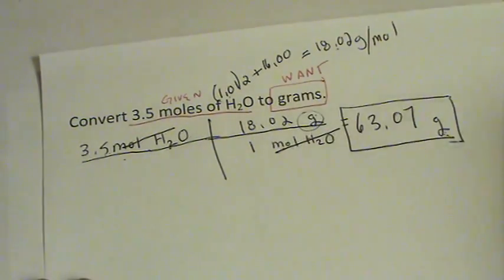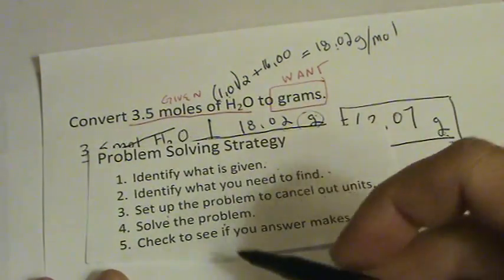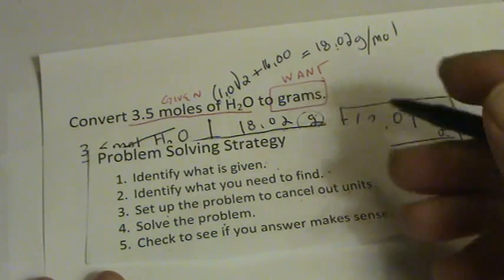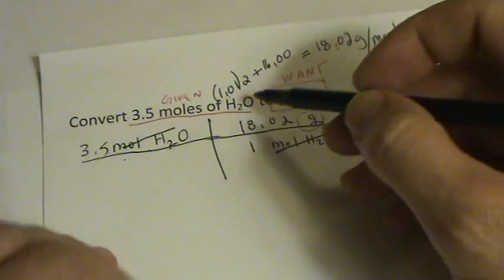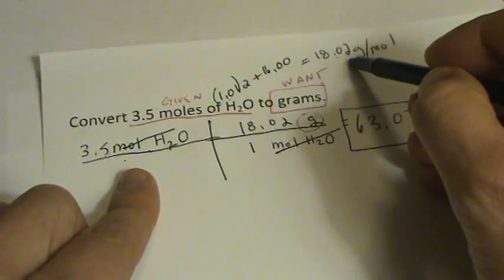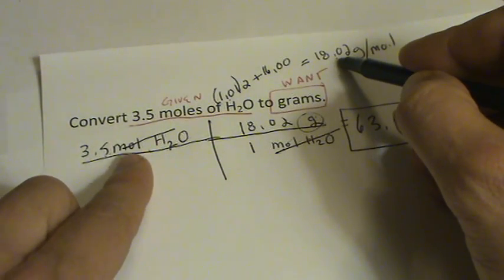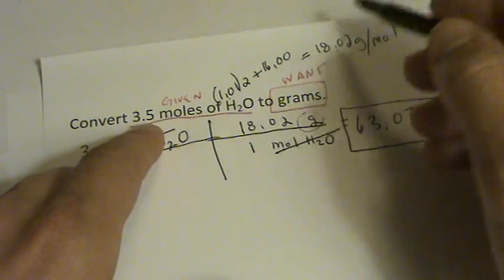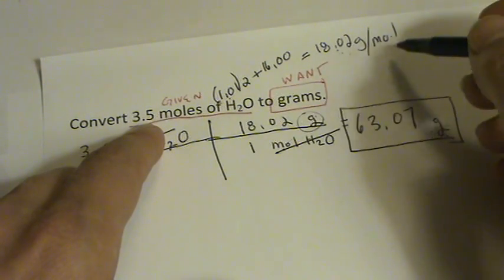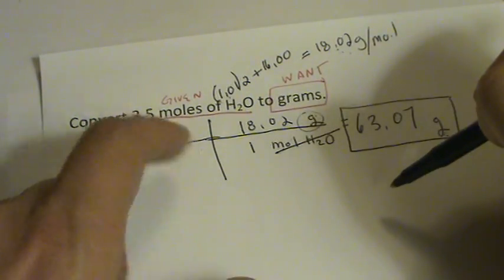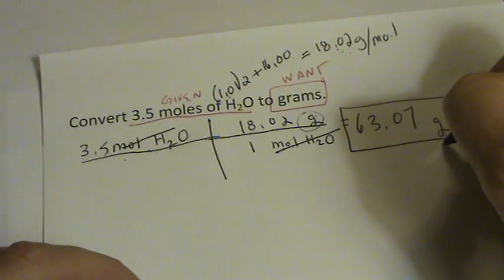Put a box around it. Looks nice. Last thing we need to do is see if our answer actually makes sense. And we know 1 mole of water is 18 grams. So 1 mole is about 20 grams. We have about 4 moles. 4 times 20 is 80. And that's pretty close to what we're looking for. So this answer is reasonable.